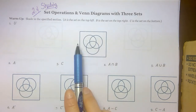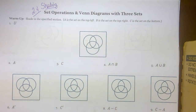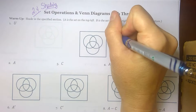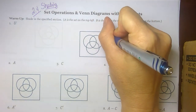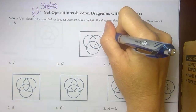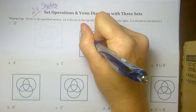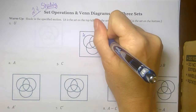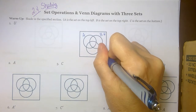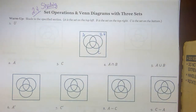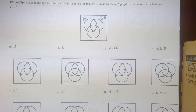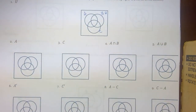We have our Venn diagram set up with three loops, and none of it is labeled, but we are going to consistently label it all the same way. We have our universal set in the box, and then we have A on the left, B on the right, and C below. It's not necessary to label it in this order, but if we all have it labeled the same way, it's going to be a lot simpler as we go through.